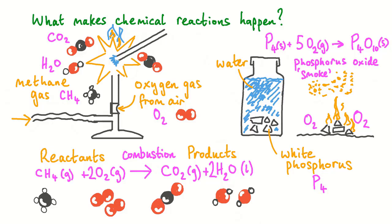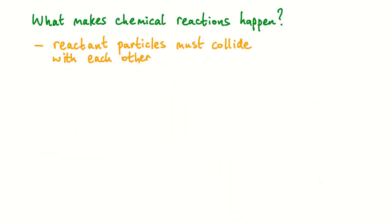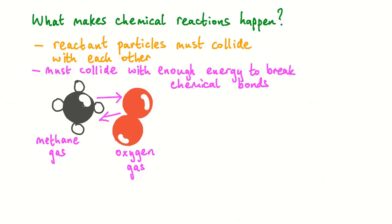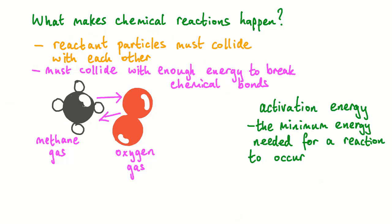In order to understand what makes chemical reactions happen, we need to explore why some reactions start easily by themselves whereas others need heating, sometimes to high temperatures first. To get a chemical reaction to happen, we need reactant particles to collide with each other. If we mix methane gas and oxygen gas together, there is no shortage of collisions between these molecules every second. But we also need these particles to collide with just enough energy to break chemical bonds within the reactant molecules. The minimum energy needed to break bonds and cause a successful collision is known as the activation energy.